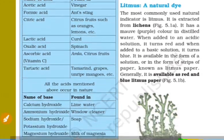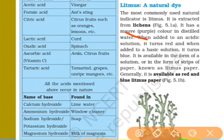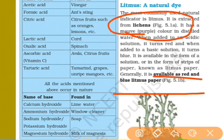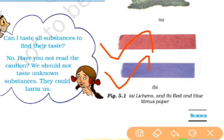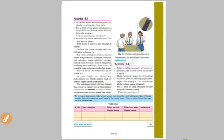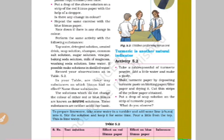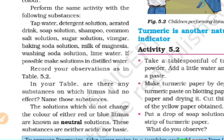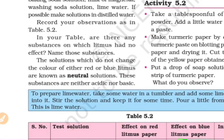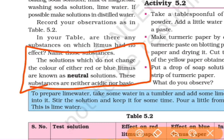We are going to make a litmus paper. This is a natural indicator — litmus paper. We use it to identify whether a solution is acid or base. In activities, we will test solutions like water, detergent solution, soap solution, and shampoo to find if they are acid or base.